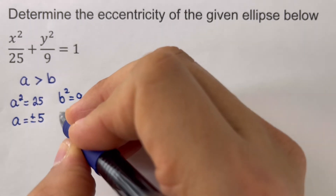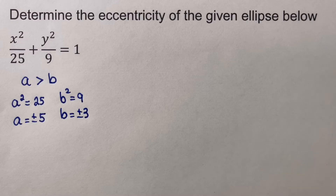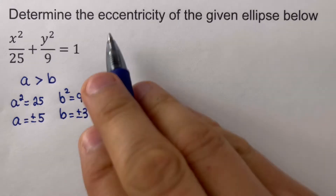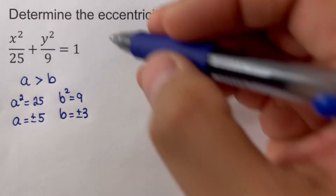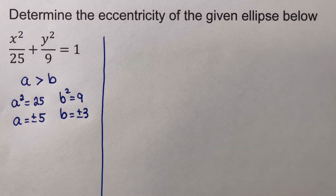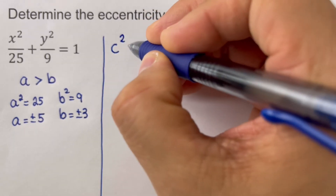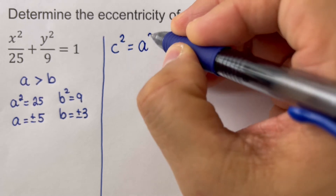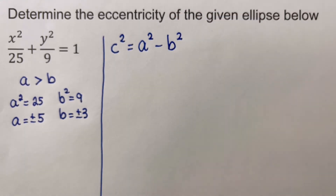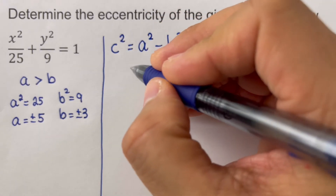On the other hand, b² = 9, so b = ±3. We already have values for a and b. Now we need c in order to determine the eccentricity. The formula for c of an ellipse is c² = a² − b², so we plug the values in: a² = 25 minus b² = 9.